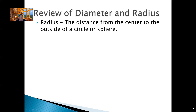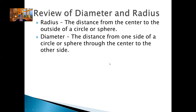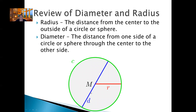Finding the volume is 3D, so let's review diameter and radius. The radius is the distance from the center of a circle to the outside of a circle or a sphere. The diameter goes all the way across through the center. So the diameter is going through the center from one side to the other, and the radius goes from the center to the edge. Does anybody know how they are related? The diameter is twice the radius.